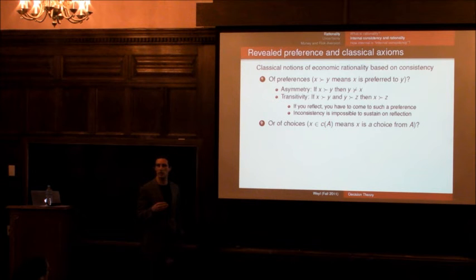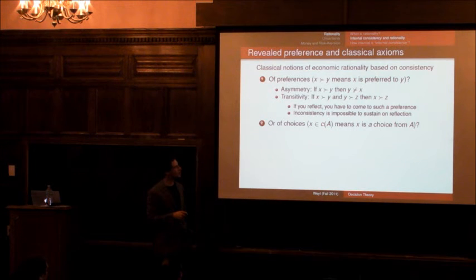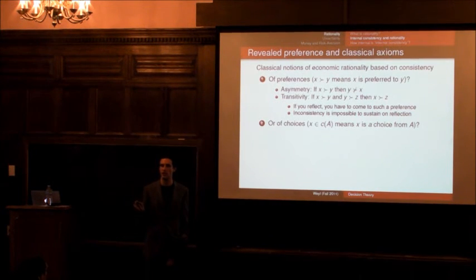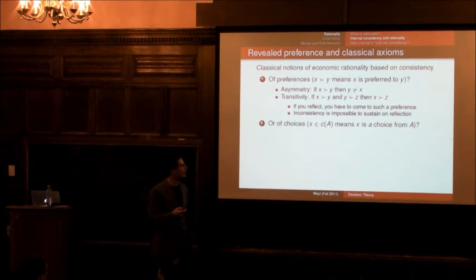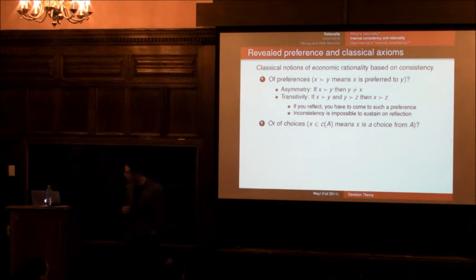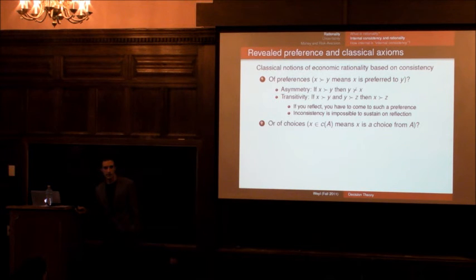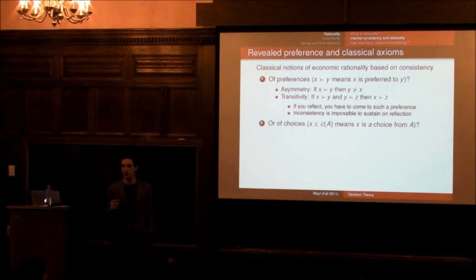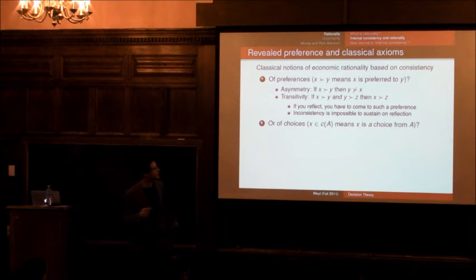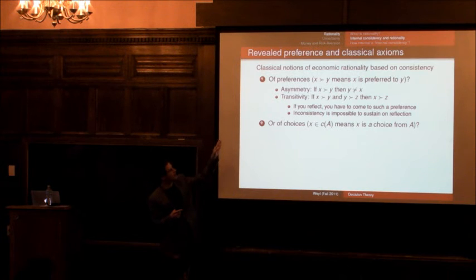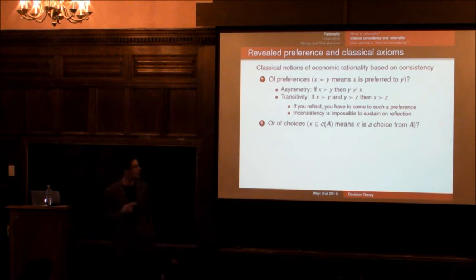So we can also frame rationality equivalently in terms of choice behavior. So we're going to say that x is chosen from a, which is x is an element of the choices of a, means that if you were presented with a set of options a, you would be happy to choose the option x. Maybe you'd also be happy to choose other things, but you'd certainly be happy to choose the option x. So Connor, Deva, what is the requirement of rationality for choice behavior?